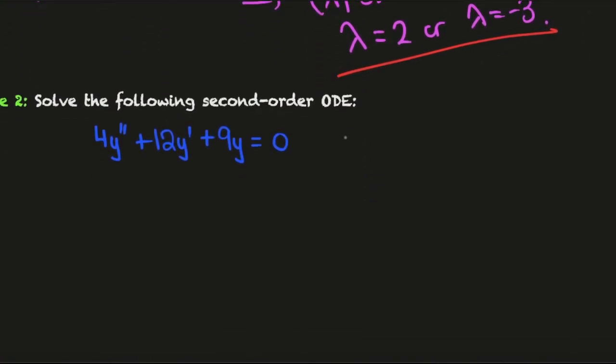Example 2: Solve 4y double prime plus 12y prime plus 9y equals 0. We conjecture the solution is e to the lambda x. Following the same computation, we get 4 lambda squared plus 12 lambda plus 9 equals 0.